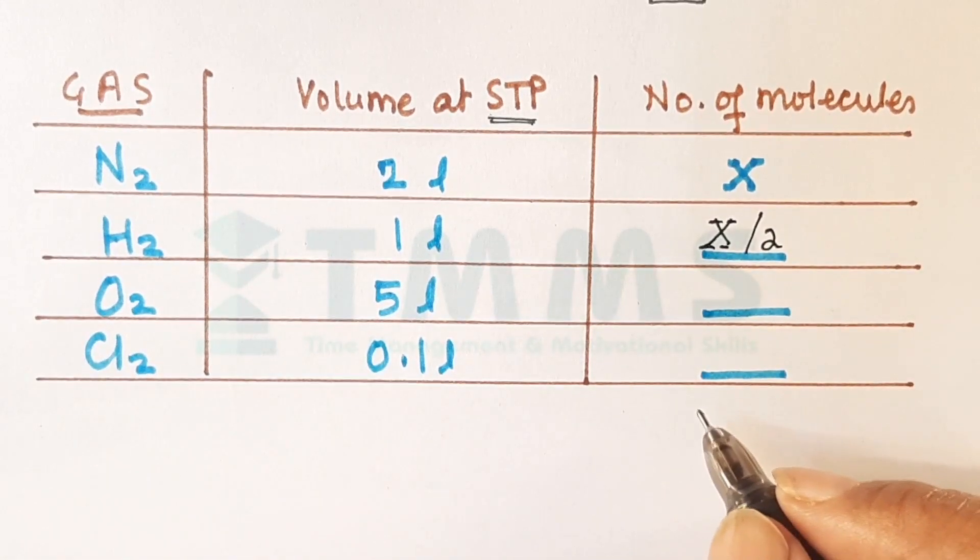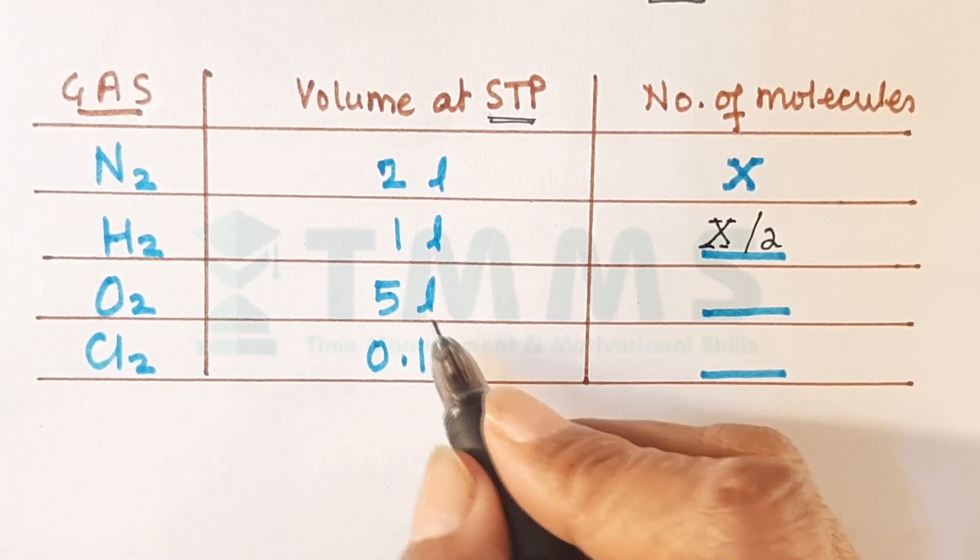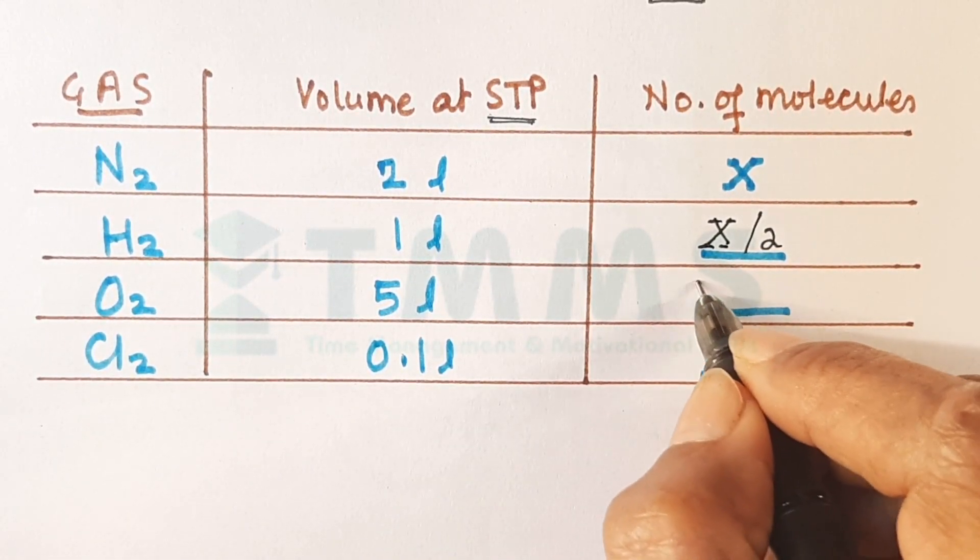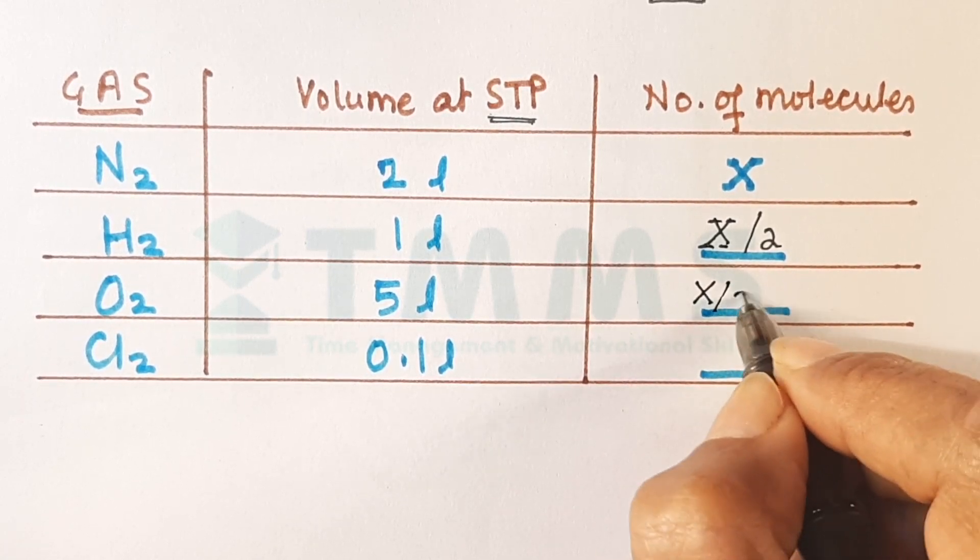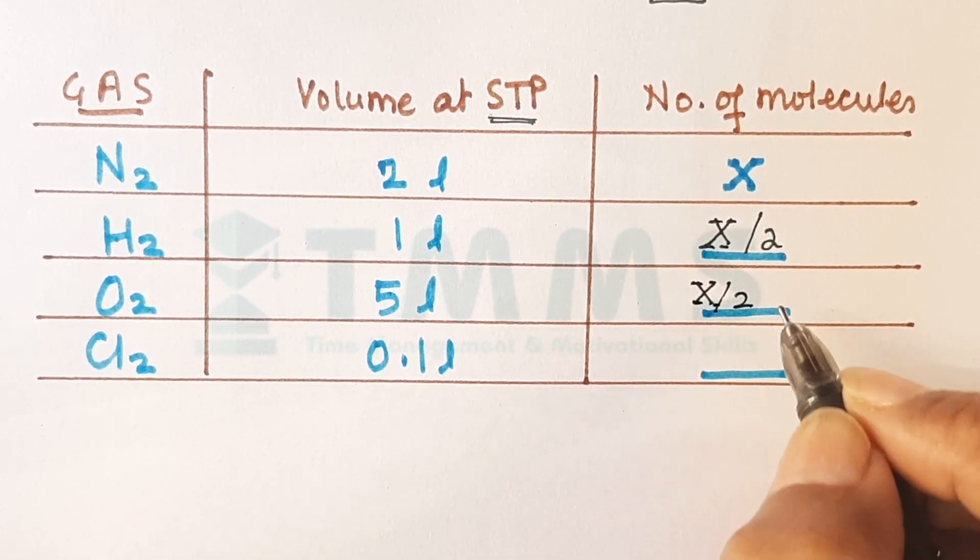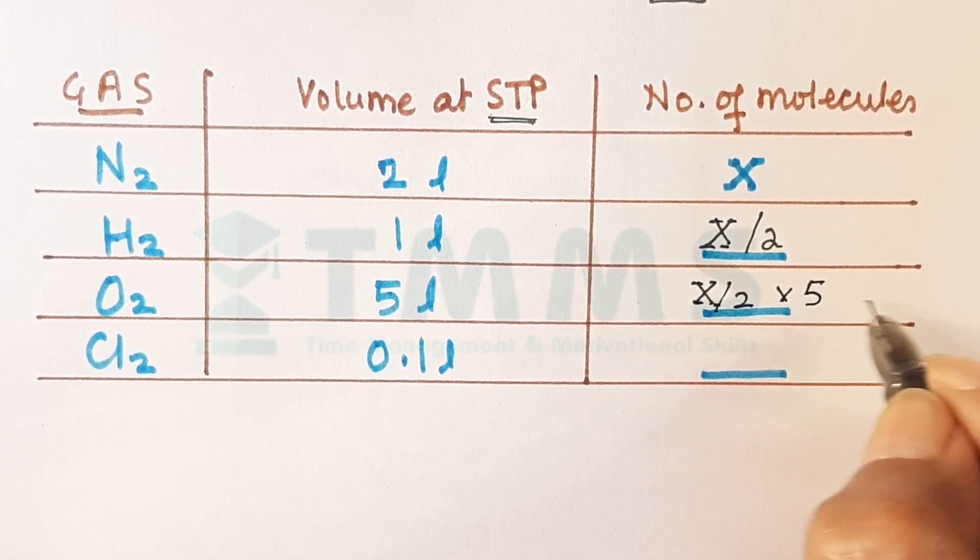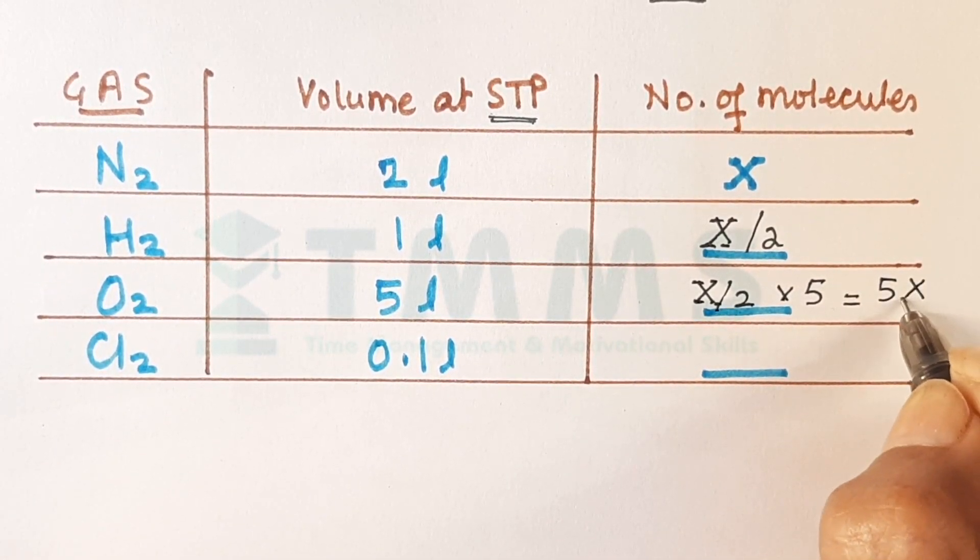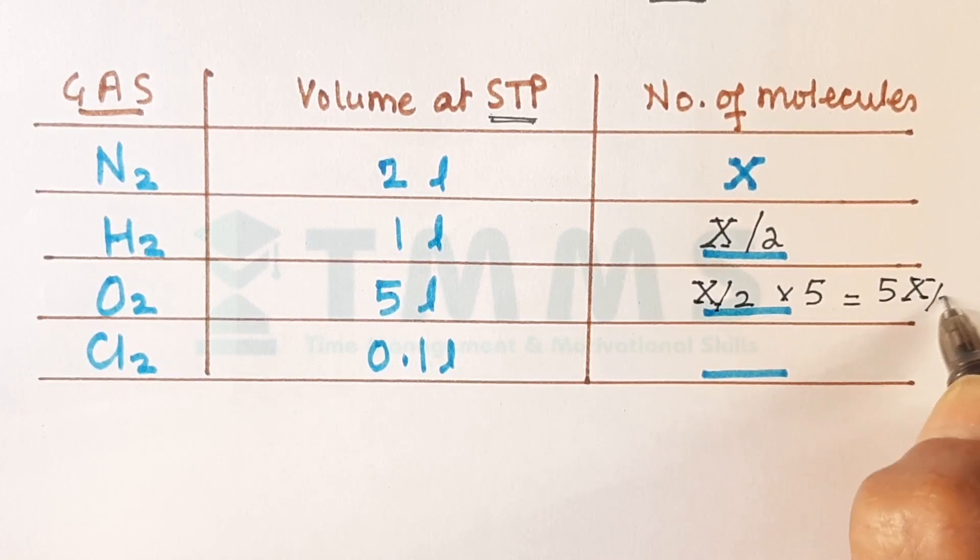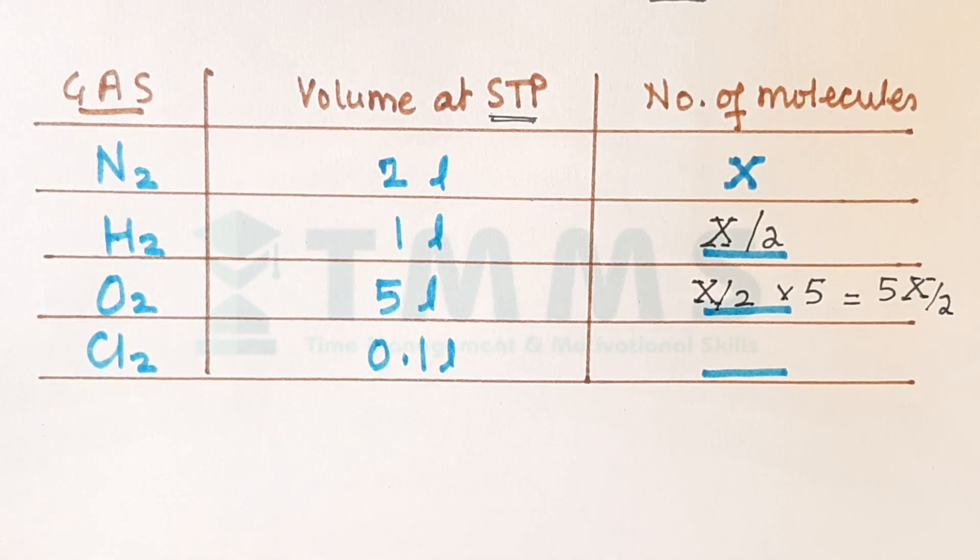And so if 2 liters is x molecules, 1 liter will be x upon 2. Agreed? Now if 1 liter is x upon 2, 5 liters will be x upon 2 and that will be multiplied by 5. So that becomes 5x upon 2. Got that?